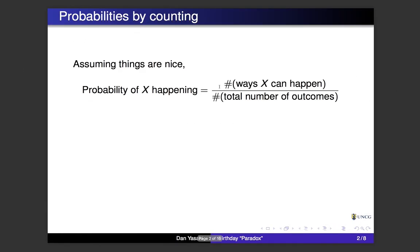Let's talk about the birthday paradox. First, a bit about probabilities. Assuming things are 'nice,' the probability of some event X happening is computed by counting the number of ways that X can happen and dividing that by the total number of outcomes. For example, you wouldn't say the probability of making an A in a class is one-fifth just because there are five possible grades. The assumption is that things are independent — each event is equally likely to happen.